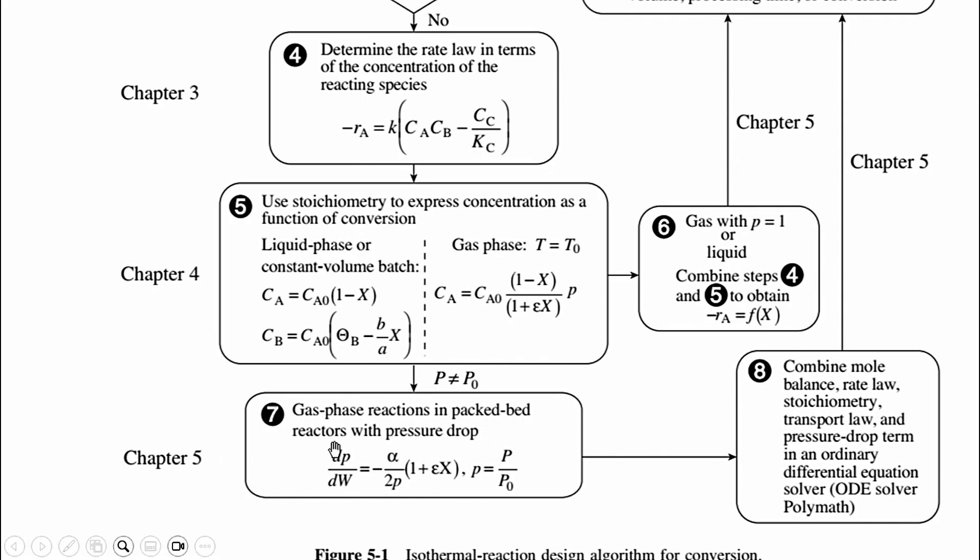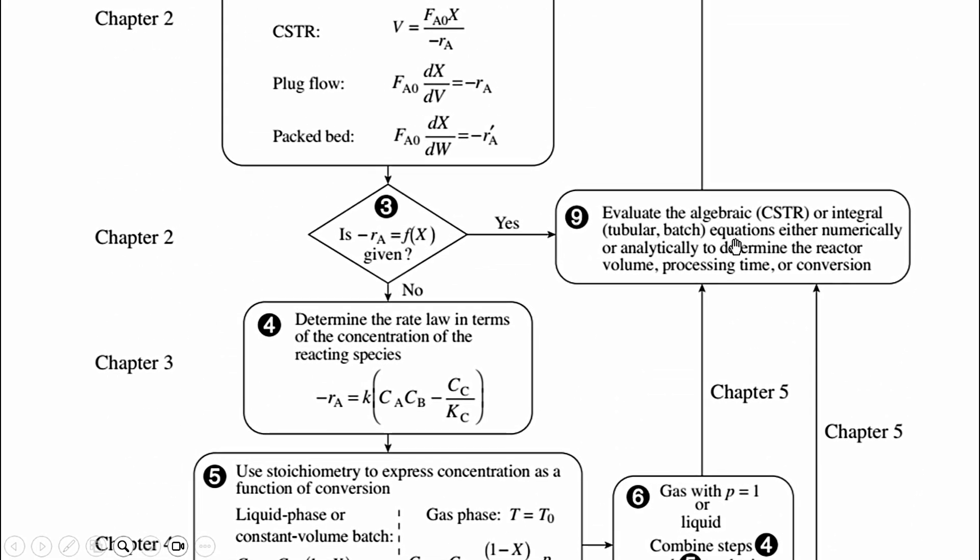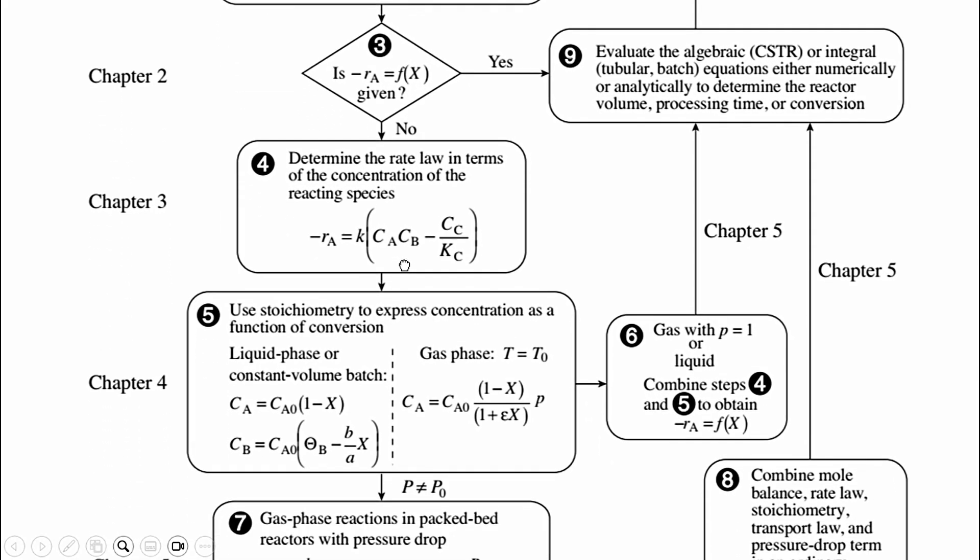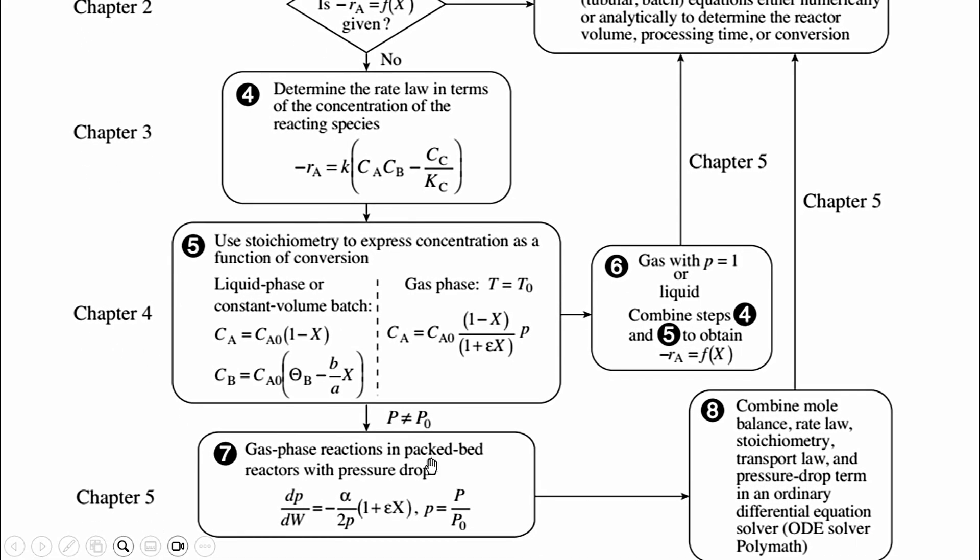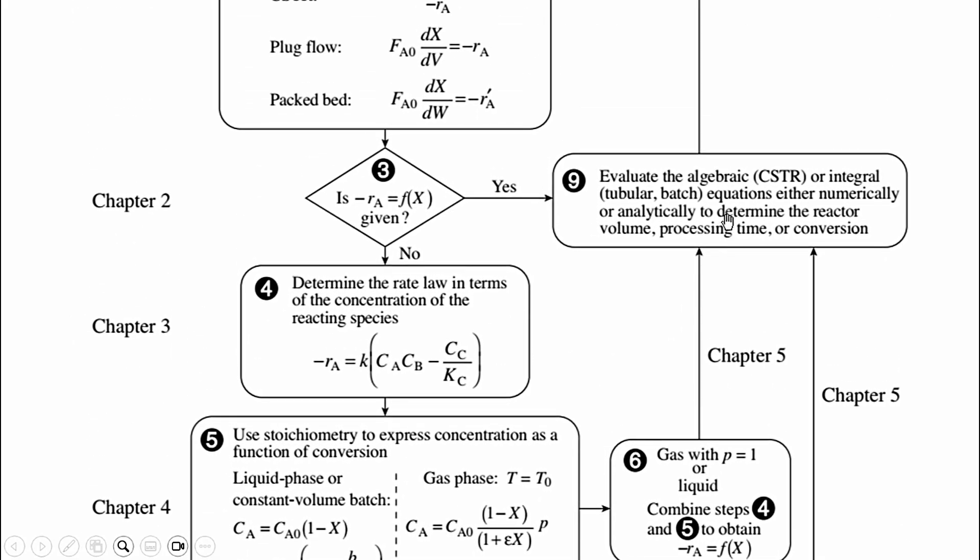However, if there is a pressure drop in the system, we have to include that pressure drop terms in the system, and accordingly chapter number five which we will be studying now will be helpful for us. Then in step number eight, combine mole balance, rate law, stoichiometry, transport law, and pressure drop term in an ODE and we have to solve that ordinary differential equation using various methods: algebraic method, polymath solution, and so on. Then we have to move to step number nine.